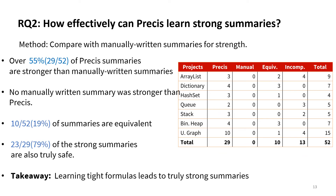The second research question asks how effectively can Prissy learn strong summaries. To measure this question, we manually write summaries for our subjects and perform inclusion checks using Z3. We find that over 55% of Prissy summaries are stronger than manually written summaries. More importantly, no manually written summary was stronger than Prissy. 19% of the summaries were equivalent, while 79% of the strong summaries learned by Prissy are also truly safe.